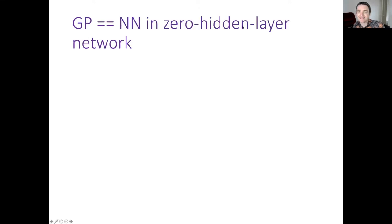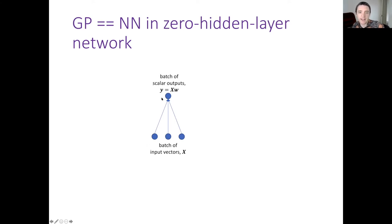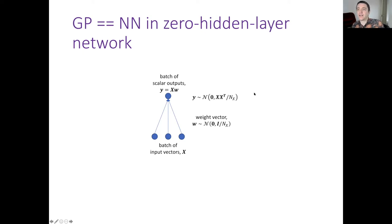In the zero-hidden-layer case, equivalent to Bayesian linear regression, we have a batch of input vectors x and scalar outputs y = xW, normalized by the number of inputs. Setting a prior on the weight vector w, we can equivalently get a prior on the outputs. This is the classical relationship between a Gaussian process and Bayesian linear regression. The covariance is XX^T, so similar inputs lead to correlated outputs.